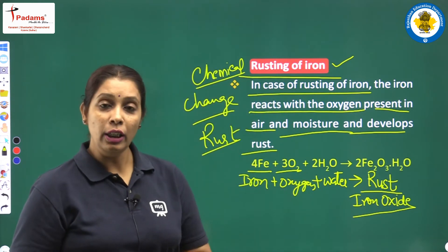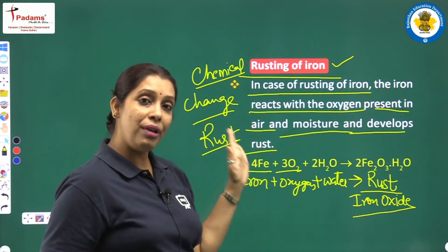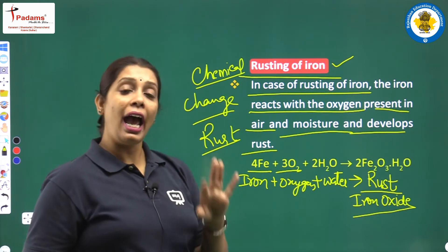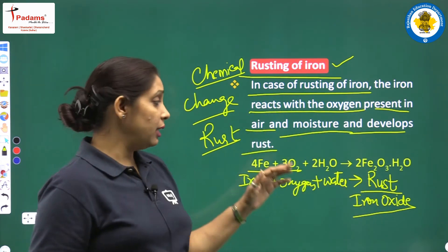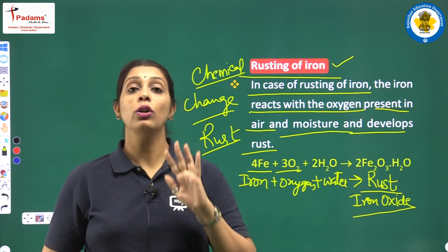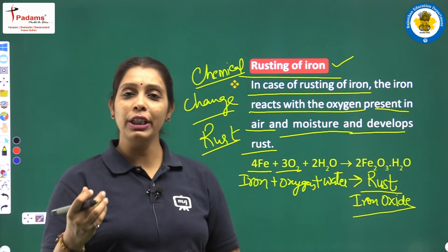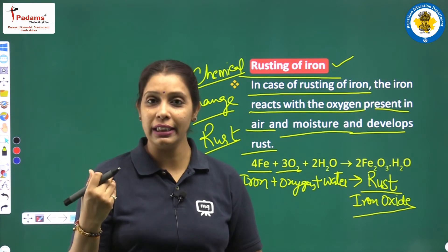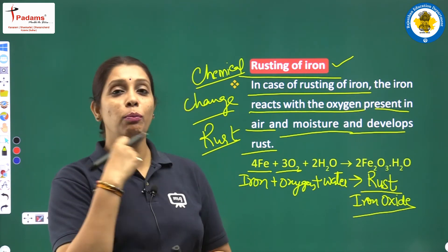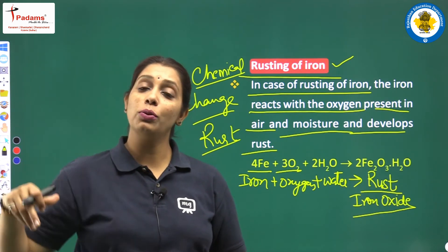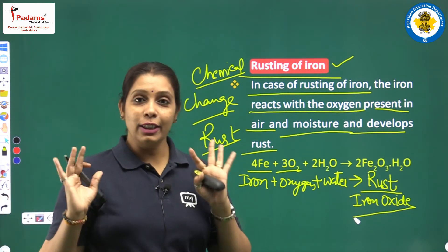Iron reacts with oxygen in air and moisture, and finally rust — iron oxide — forms over the iron. You might have seen this at home when mama uses tawa for making chapatis. Jab mama usko wash kar deeti hai aur uske upar little bit moisture raha jaata hai, you can find brown layers over it — that is rust.